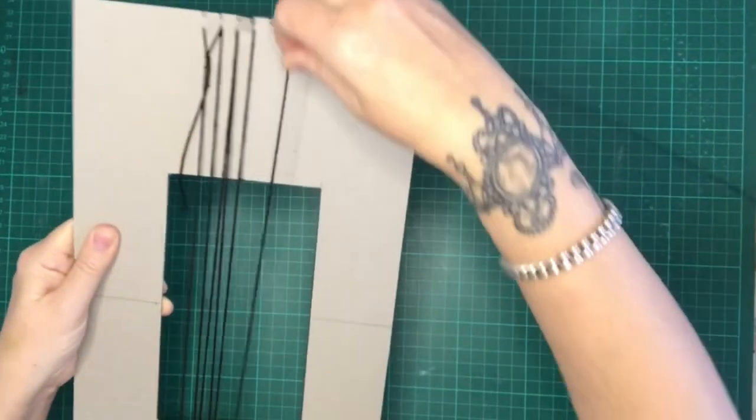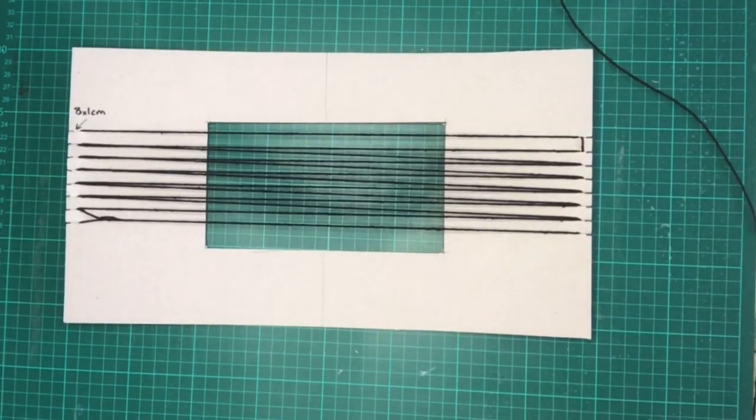Continue threading up the loom in this manner. What you'll end up with is two threads through each notch except for the two end ones. They'll only have one each.